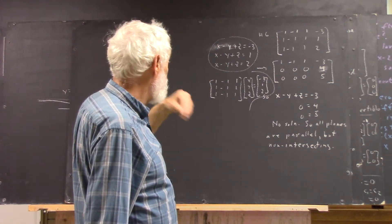So the system is totally incompatible. This would tell us that x minus y plus z is negative three, and that zero equals four and zero equals five. Because if x minus y plus z is negative three, then negative three has to equal one, which would mean zero equals four. And this would tell you that negative three equals two, which means zero equals five. Totally incompatible.